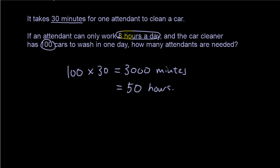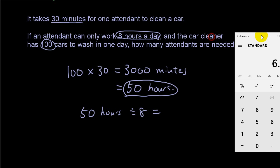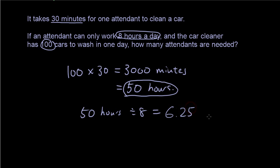Now, because an attendant can only work 8 hours a day and you've got 100 cars to wash, 50 hours is how long it'll take if there was only one attendant. But obviously, we're going to employ more than one attendant. So, 50 hours divided by 8 is 6.25. Now, you can't employ 0.25 of a person, can you? So, you need 7 mechanics.